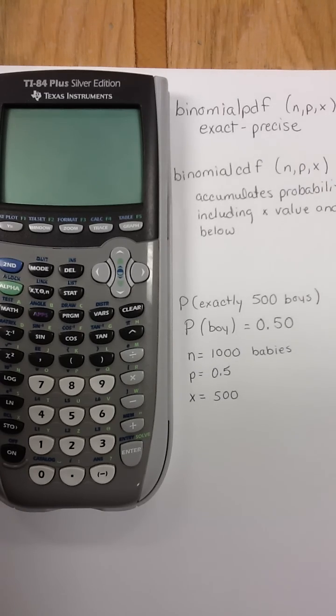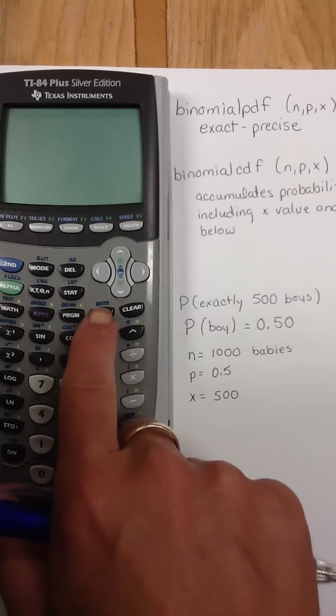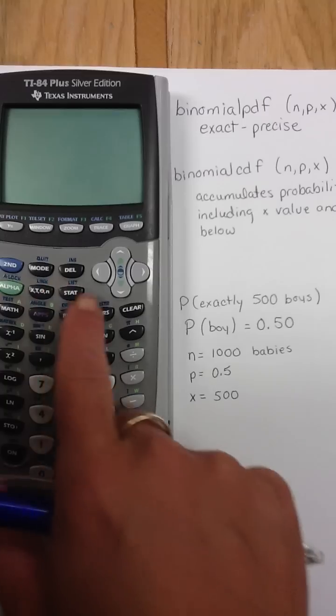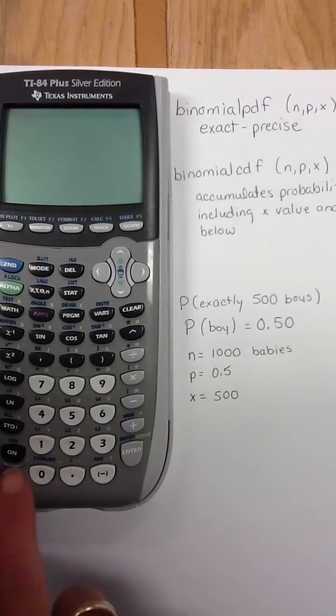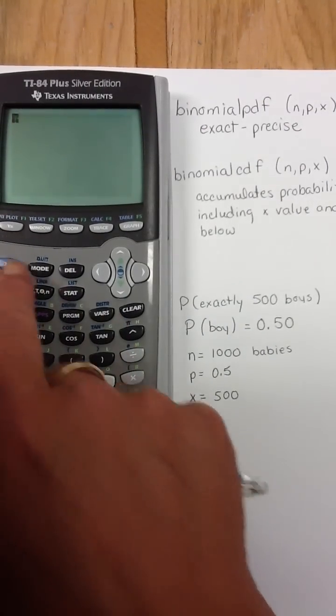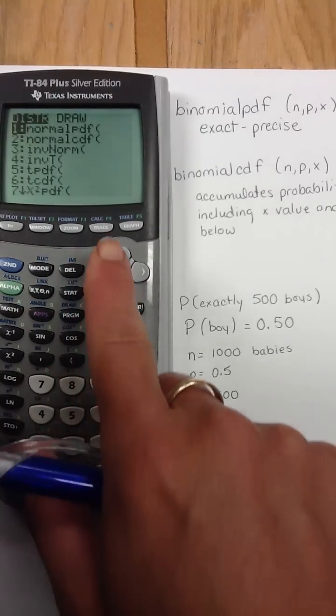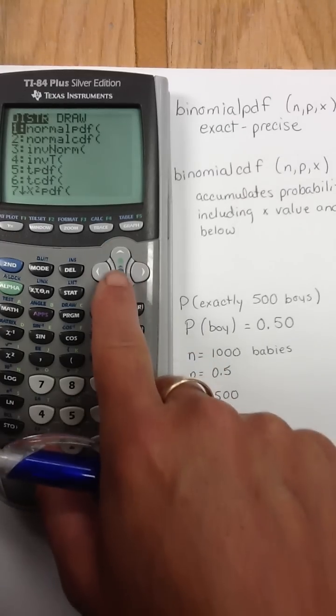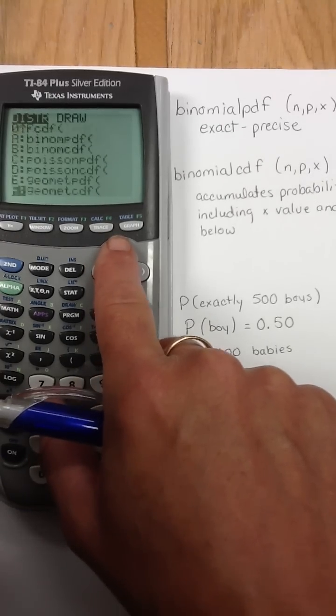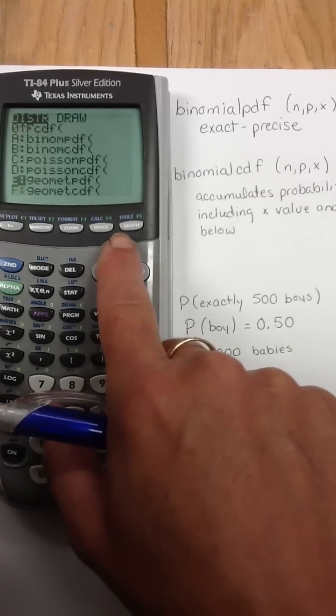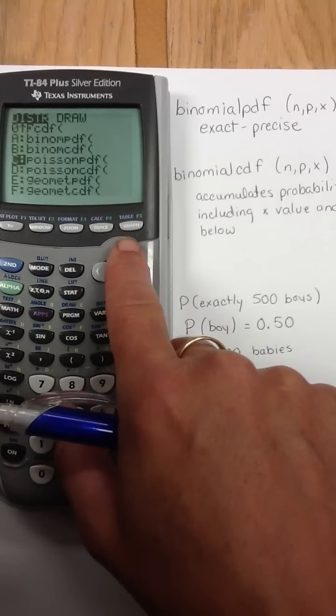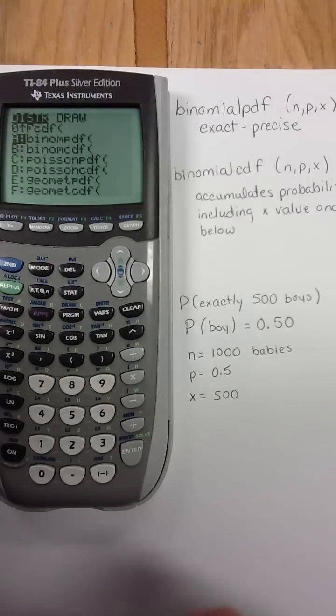For your binomial distribution, we are going to go to the distribution function. If we look right above that VARS key, we have the distribution function. So, second, distribution, and now we're going to have to arrow down or up. It's quite a ways down, so I arrowed up instead so I could get to it a little quicker. Now, I'm going to go to binomial PDF.